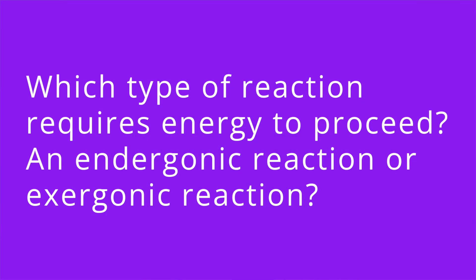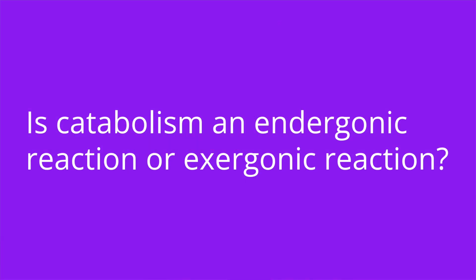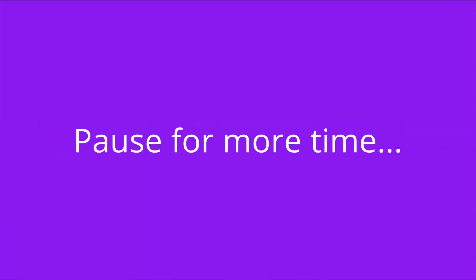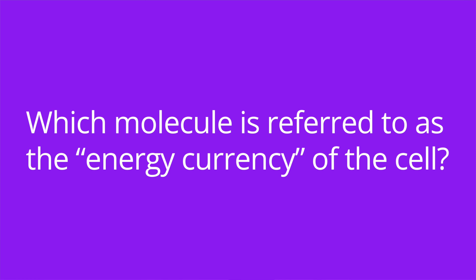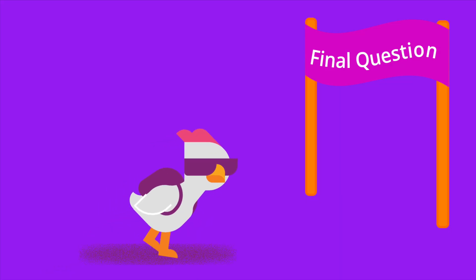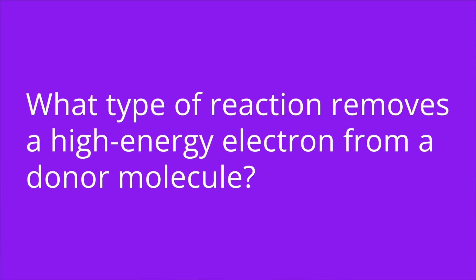It's quiz time — I have four questions for you. Question one: which type of reaction requires energy to proceed — an endergonic reaction or an exergonic reaction? The answer is an endergonic reaction. Question two: is catabolism an endergonic or exergonic reaction? The answer is exergonic. Question three: which molecule is referred to as the energy currency of the cell? The answer is ATP. Question four: what type of reaction removes a high energy electron from a donor molecule? The answer is an oxidation reaction.